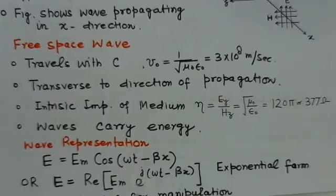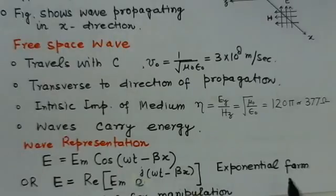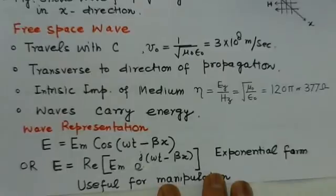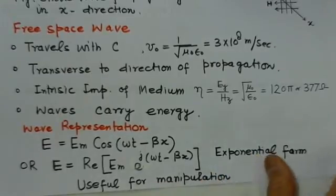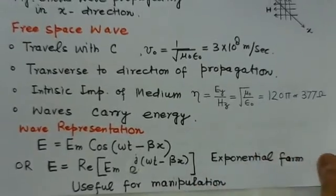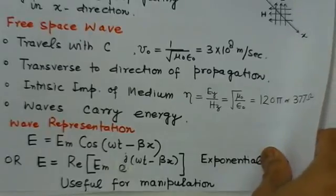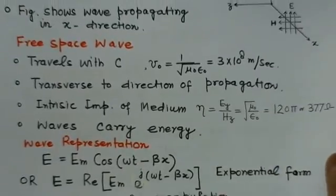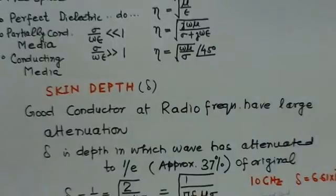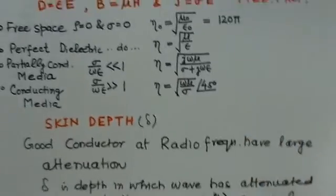This can more conveniently be written in exponential form as the real part of Em·e^(j(ωt-βx)). It is observed that this exponential form is more convenient for manipulation of these equations, so in many cases we will use this exponential form.